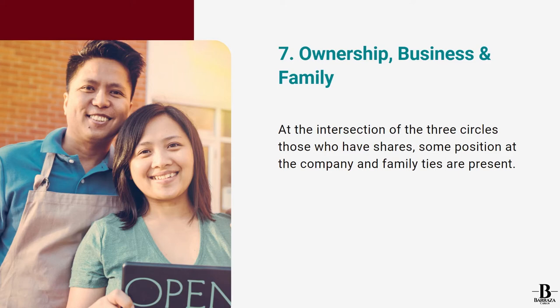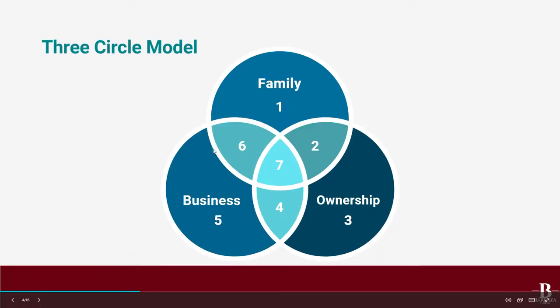Being in one of these areas of the three circle model will vary according to the different types of persons working in or alongside the business. These differences make each family business unique. There is no single structured way to say all family businesses are like this — although there are certain patterns that may repeat — because the essence comes from the core values of the family.